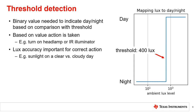Similar to brightness control, the lux accuracy of the sensor is important in making an accurate determination. Therefore, human eye matching is an important sensor specification. This allows similar performance under different light source types — for example, taking the correct action in both clear and cloudy days.